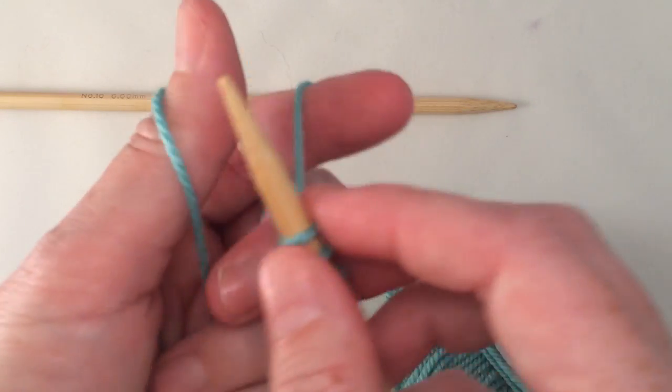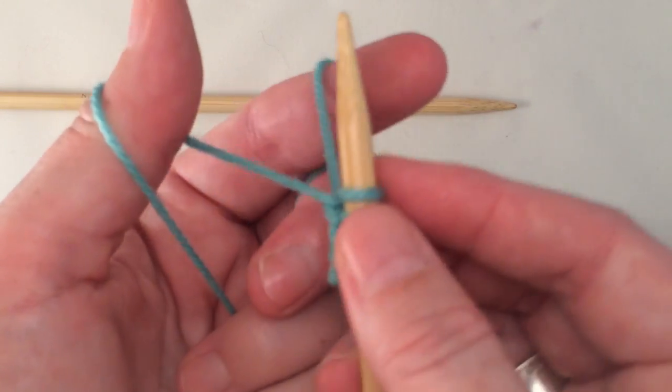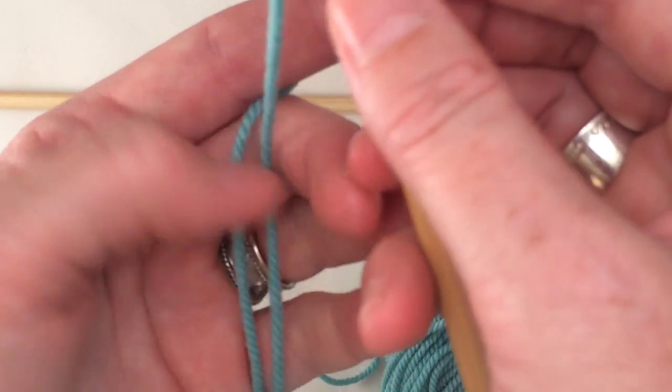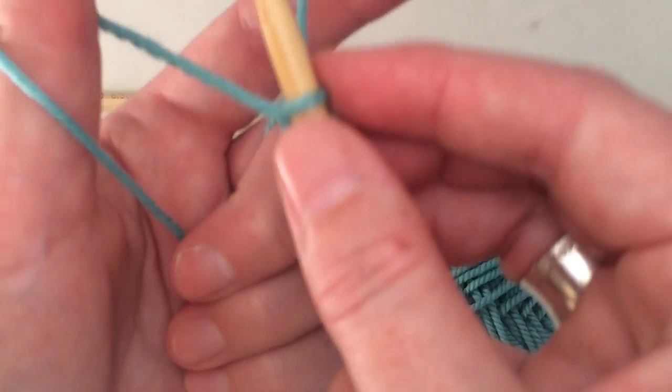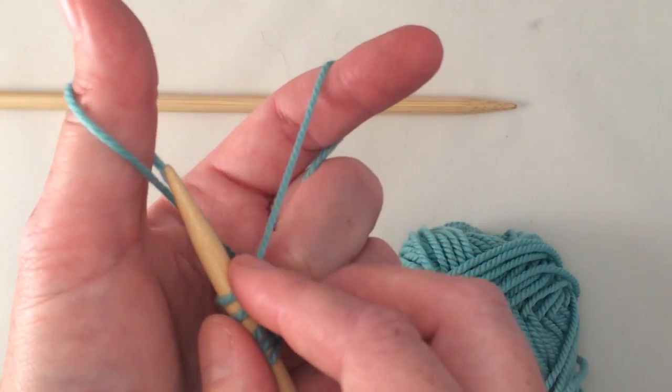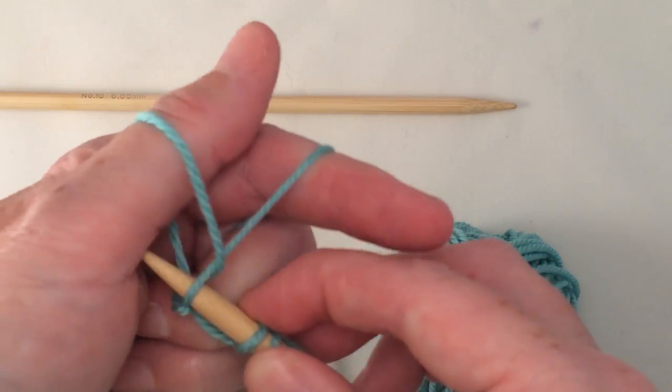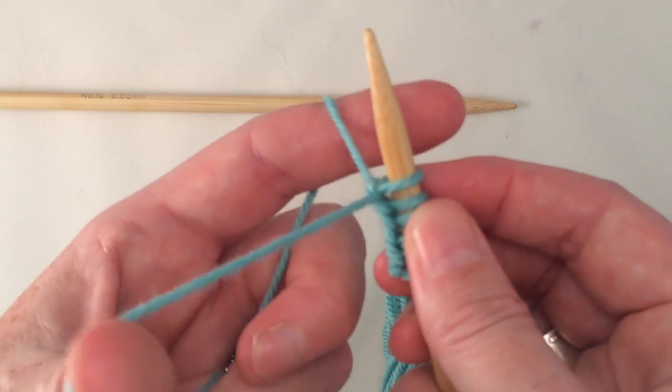It's a really nice smooth method once you get the hang of it. And you just want to make sure that you have a nice grip on these two tails but that they're not too tight. So we'll come out of the hole, over the fence, and back in the hole. And then you put your thumb back there to tighten.